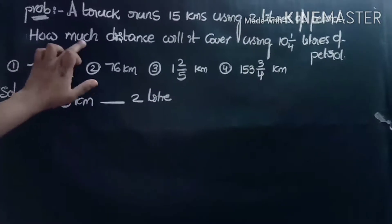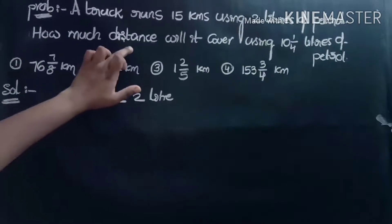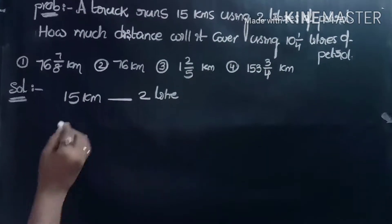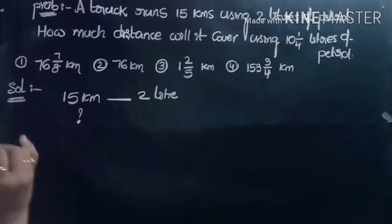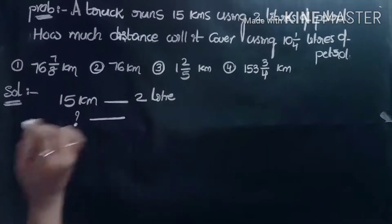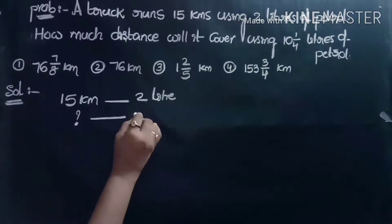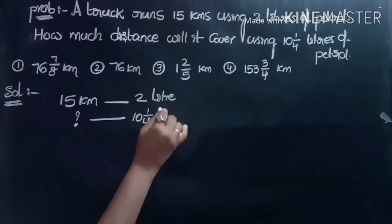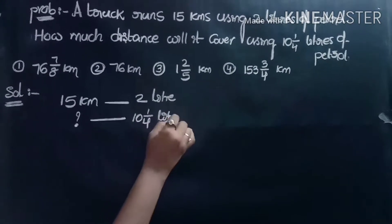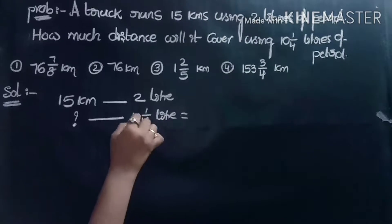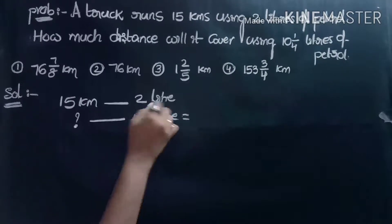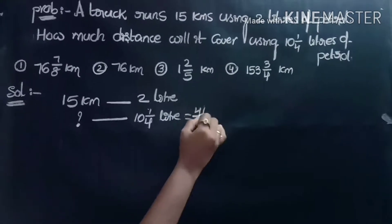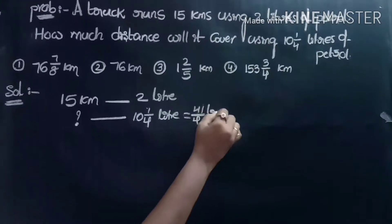The question is: how much distance will it cover using 10 and 1/4 liters of petrol? So, 10 and 1/4 liters equals 4 times 10, which is 40 plus 1, giving us 41/4 liters.